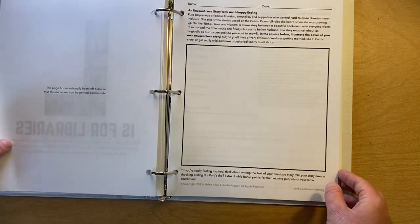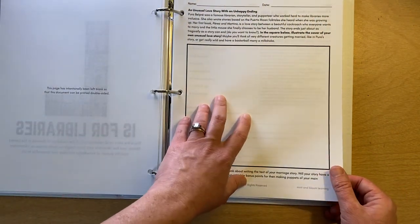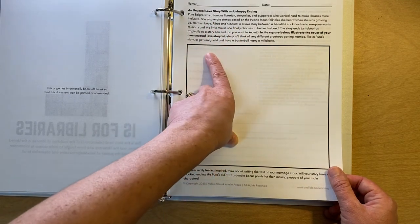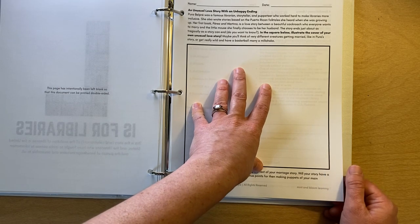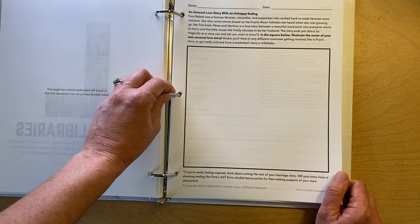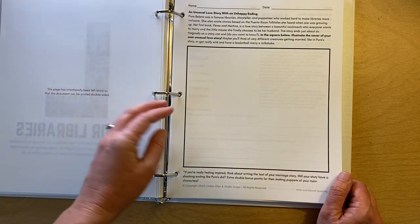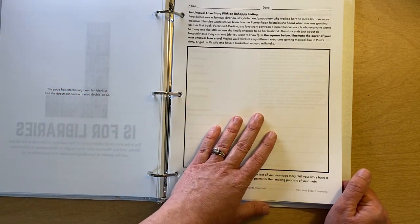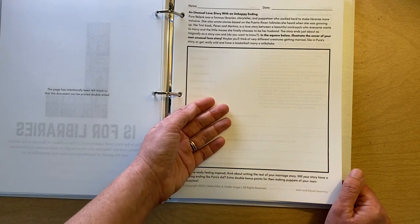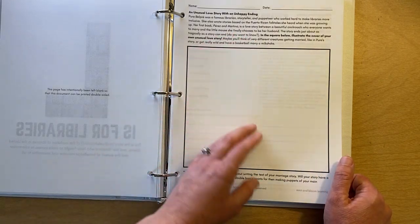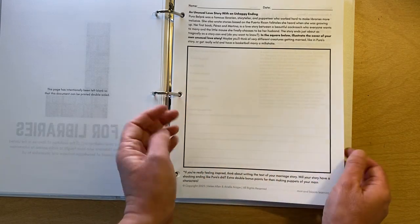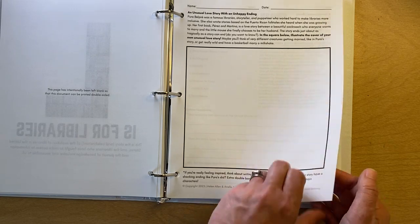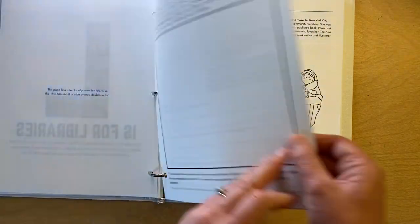L is for Libraries. We learn about Pura Belpre's wonderful book, Perez and Martina. And it's a great story. If you don't know it, that's a love story between a beautiful cockroach and all the suitors who want to marry her. So we invite kids to make their own unique love story. Because our beautiful cockroach lady ends up with Perez, who is a little mouse. And so make your own beautiful but unusual couple. That's the cover of your own little story. Oh, and we say too, Pura Belpre was a famous puppeteer. So if you get really inspired, you might turn your characters into puppets also.